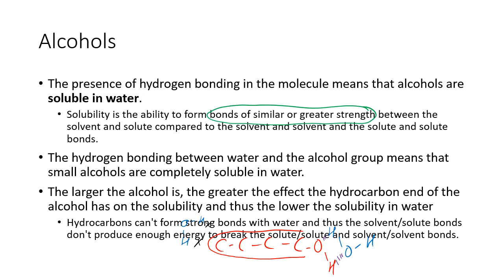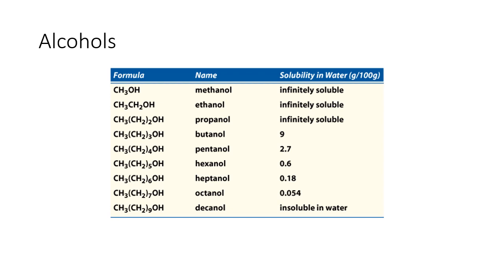Hydrocarbons can't form strong bonds with water, so the solute-solvent bonds don't produce enough energy to break the solute-solute and solvent-solvent bonds. Looking at the data: as the chain length increases, solubility decreases. At some point the alcohol becomes completely insoluble — even decanol, which only has 10 carbons, is insoluble in water. Only smaller alcohols are soluble; as the hydrocarbon tail grows, solubility drops.